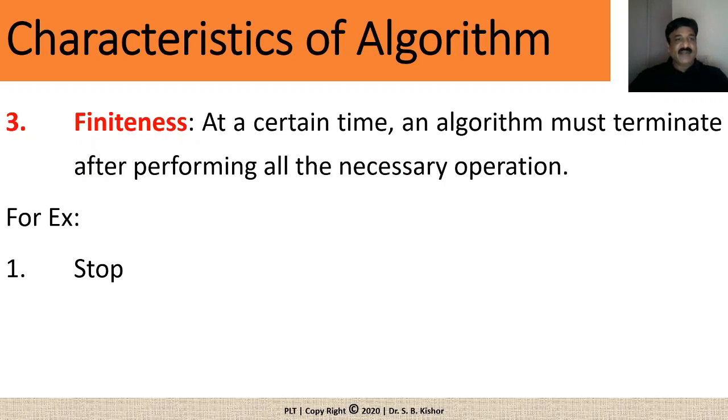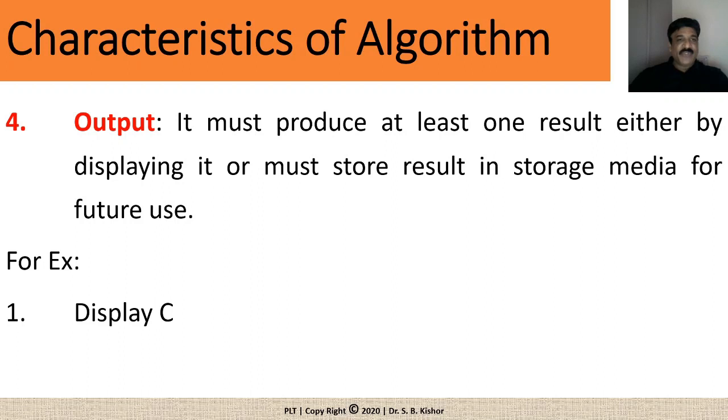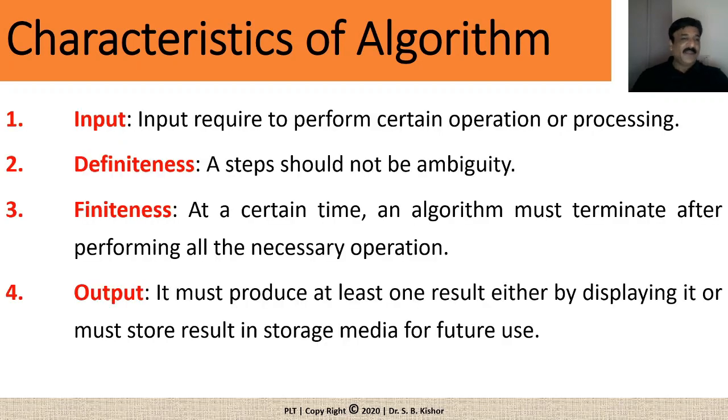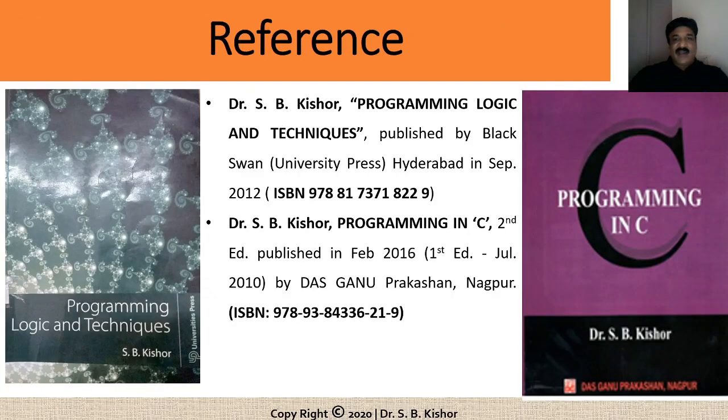Then, make sure that there is a finite number of steps and after which your program is going to terminate, your algorithm is going to terminate. So, at a certain time, algorithm must terminate after performing all the necessary operations. It means you must have a certain statement called stop which will indicate our execution of the algorithm is over and also make sure that there is at least one output while writing an algorithm. It means every algorithm must produce at least one result either by displaying it or must store a result in a storage media for future use. So, this is a complete stop your characteristics of algorithm and these are some of the references.